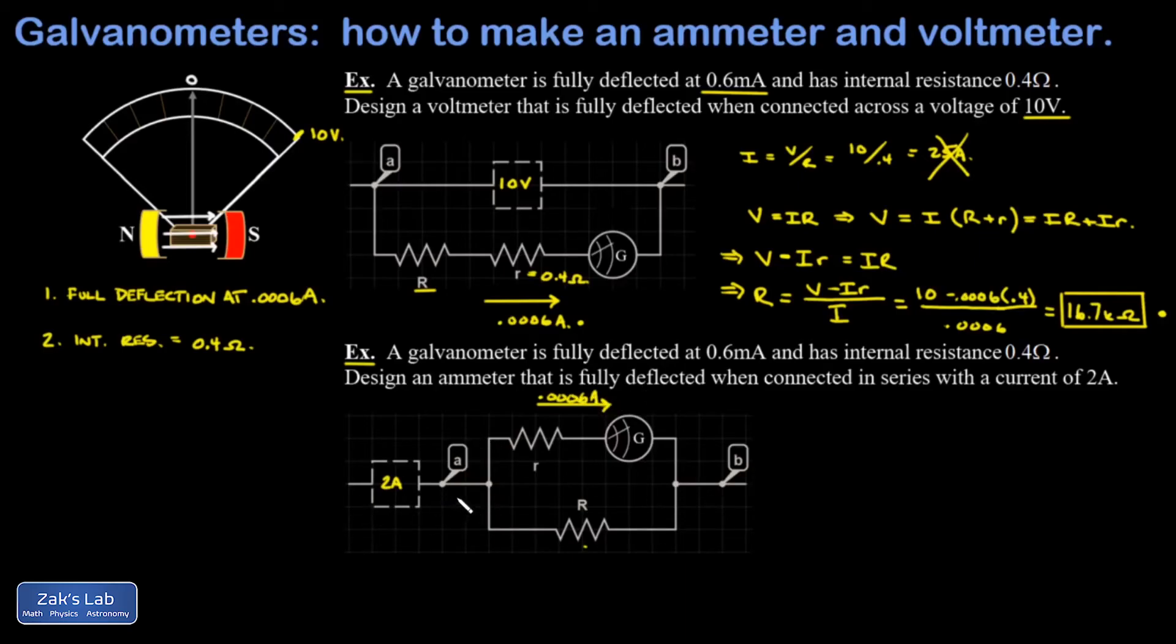My total current is two amps, but to stay symbolic, I'm going to call this I total coming into the parallel combination, and that splits into I1 and I2. I know what I1 is: 0.0006 amps. And I2 would be two amps minus 0.0006 amps.